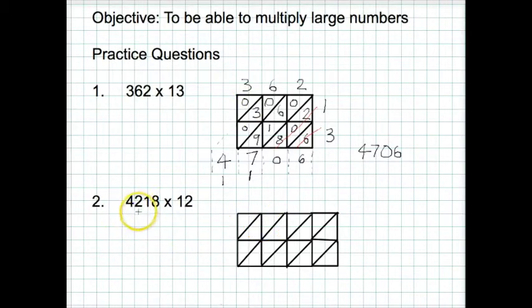OK. Question 2. This time we've got a 4 digit number by a 2 digit number. So in order to do this I need to extend my grid along by one more column. I now write the 4, the 2 and the 1 and the 8 along the top and the 12 there down the side.